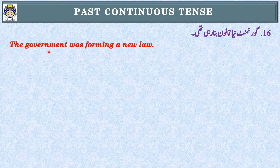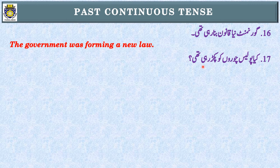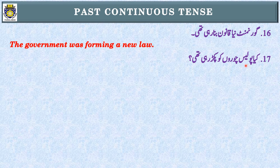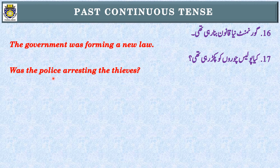Sentence number seventeen: کیا پولیس چوروں کو پکڑ رہی تھی؟ First step: 'رہی تھی' — Past Continuous Tense۔ Second step: 'کیا' کو ignore کریں — subject 'پولیس' (singular noun)، was use کریں گے۔ Interrogative ہے تو was کو start میں لائیں: Was the police arresting the thieves? — and question mark.